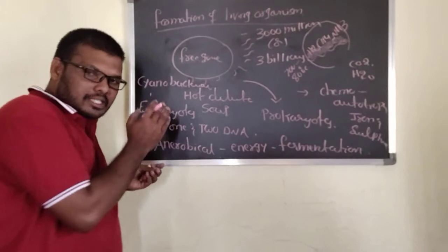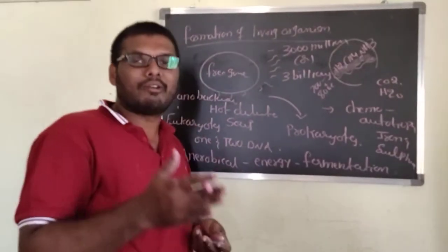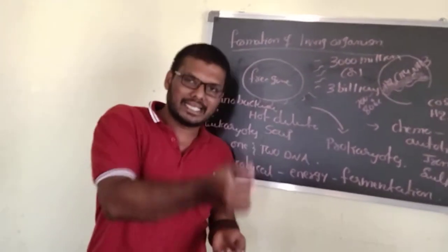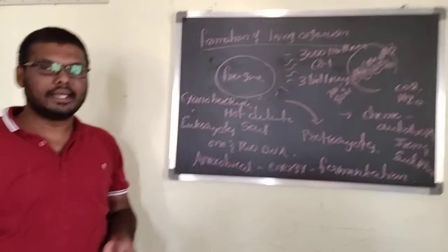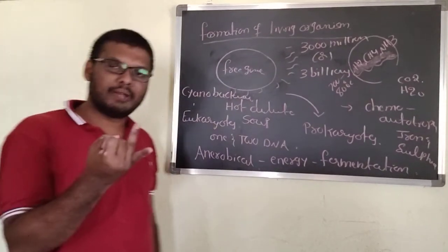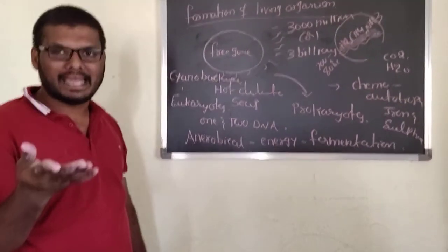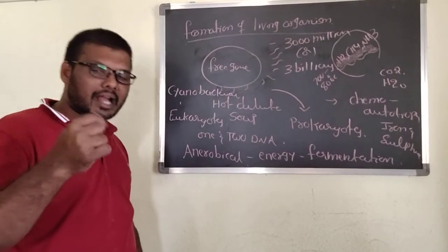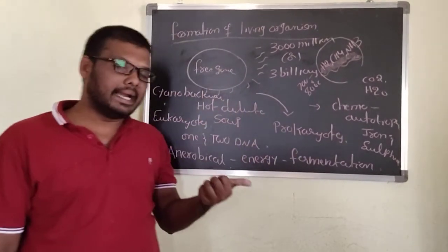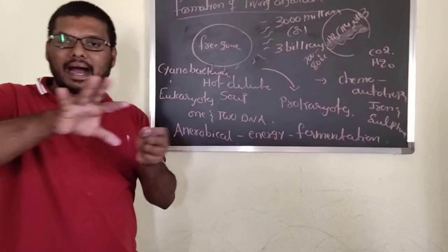This is the simple form. Simple form is converted to complex form. First is cellular level, then tissue level, then organ level, then organ system level. This type of levels can be seen in the animal kingdom. The first phylum is Porifera — cellular level. Second is Cnidaria — tissue level. Ctenophora — tissue level. Platyhelminthes — organ level and organ system level. Nematoda — organ system. From Nematoda through Annelida, Arthropoda, Mollusca, Echinodermata, Hemichordata, Chordata — these are all organ system level.